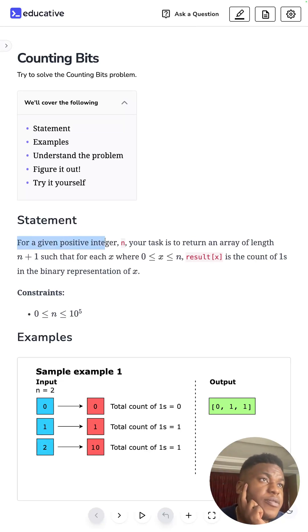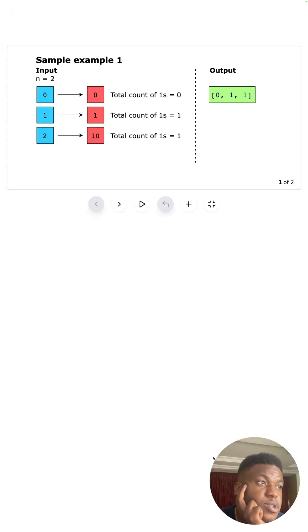The problem statement: for a given positive integer n, your task is to return an array of length n+1 such that for each x where 0 ≤ x ≤ n, result[x] is the count of ones in the binary representation of x.